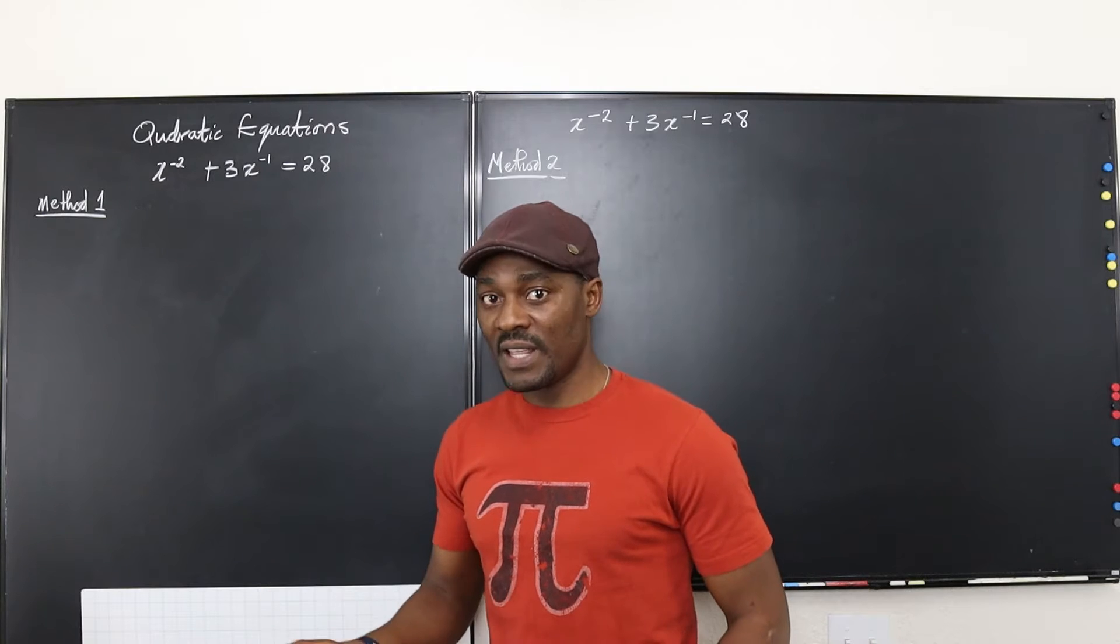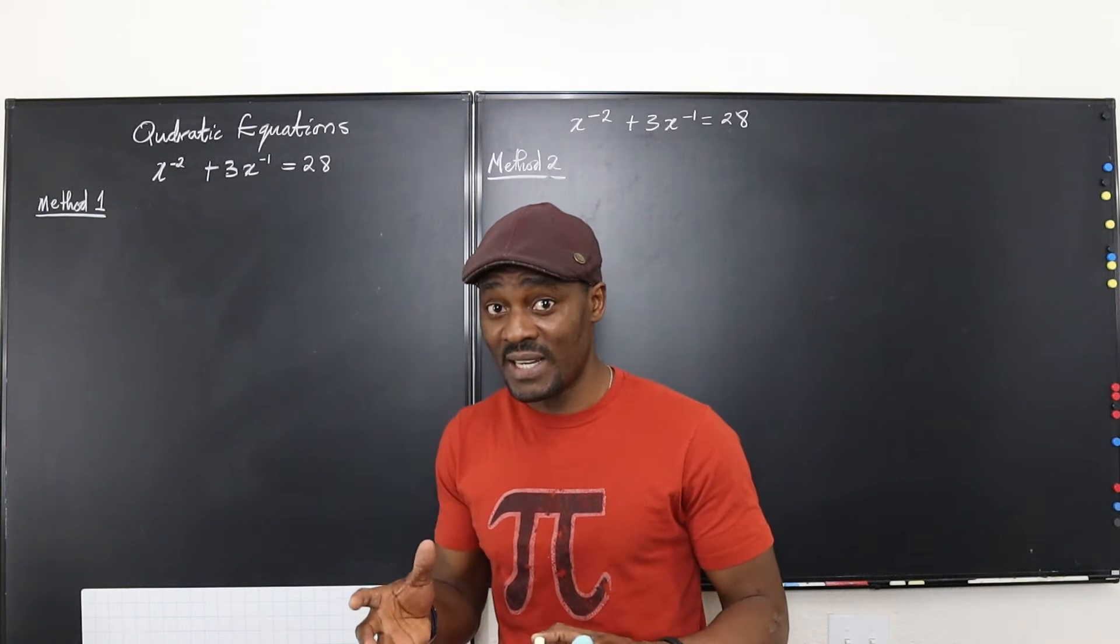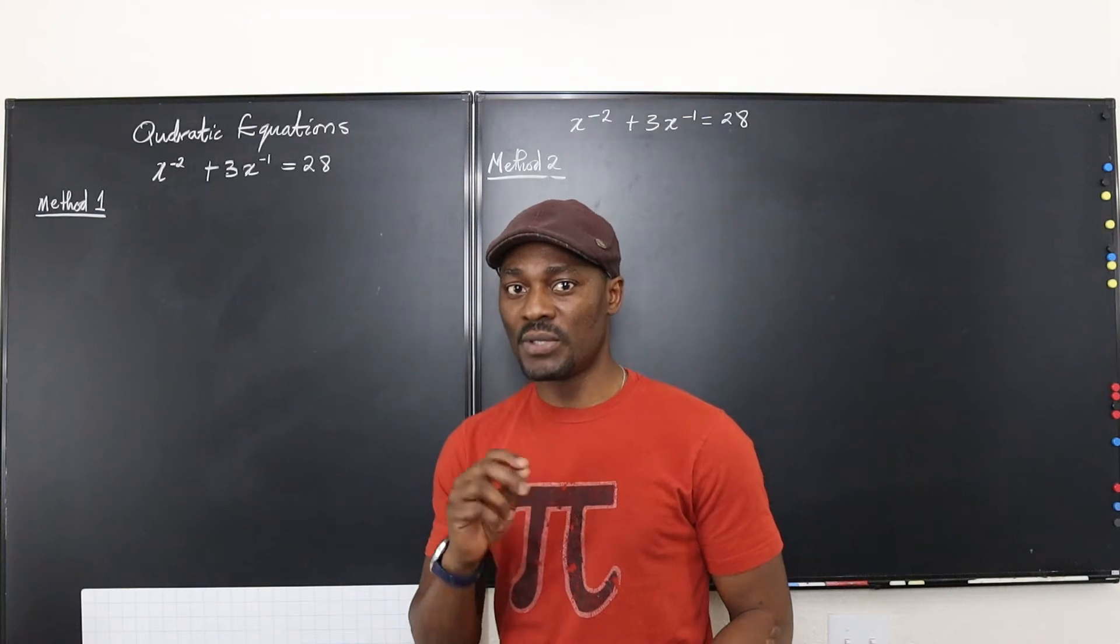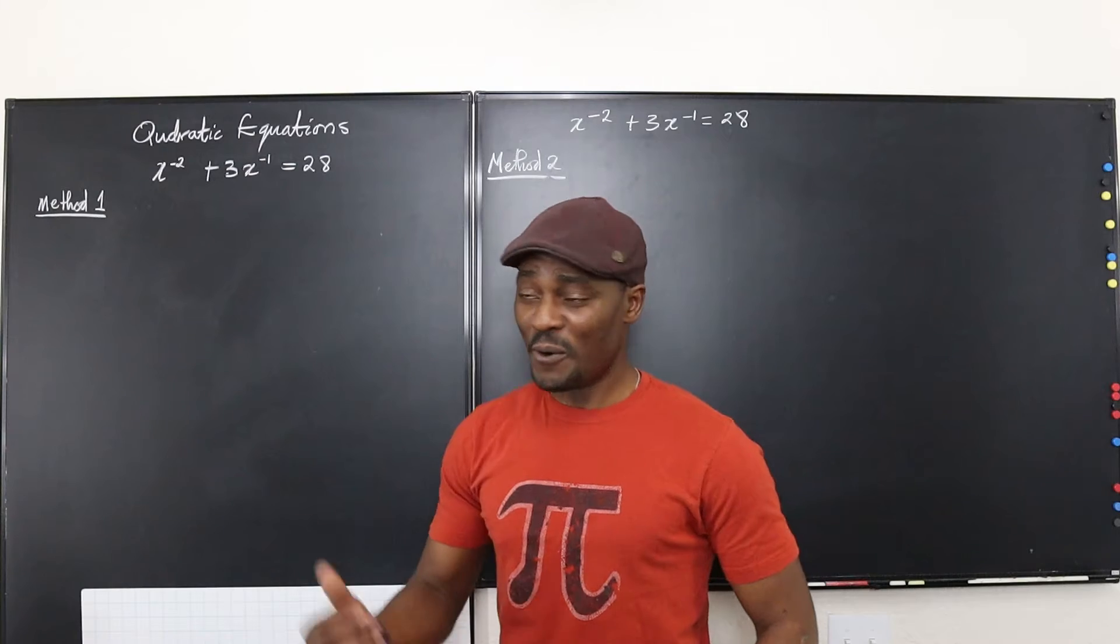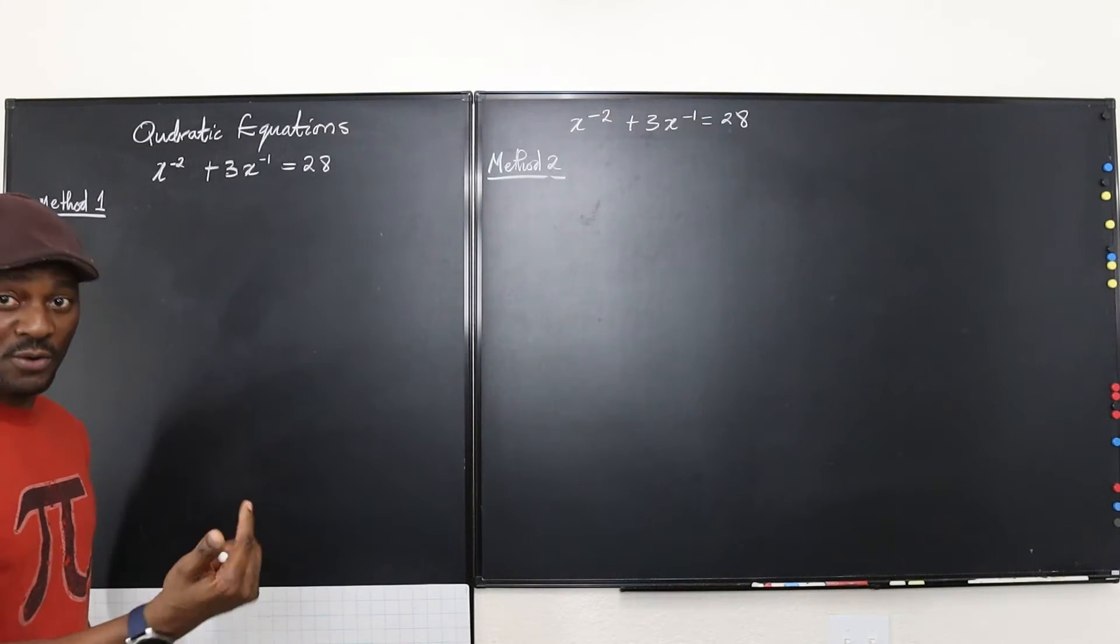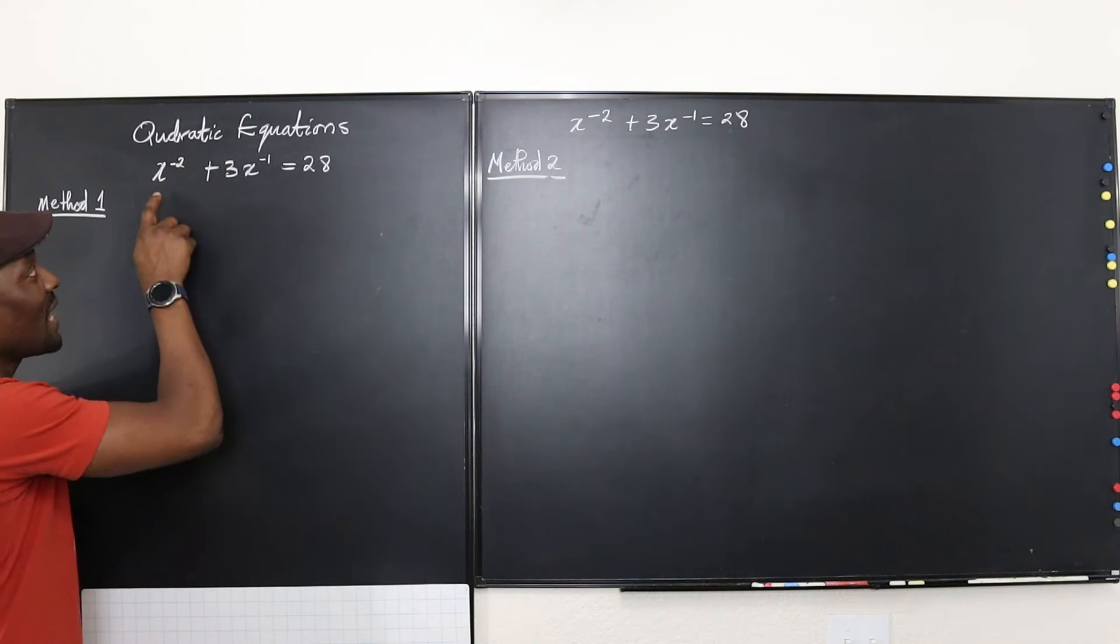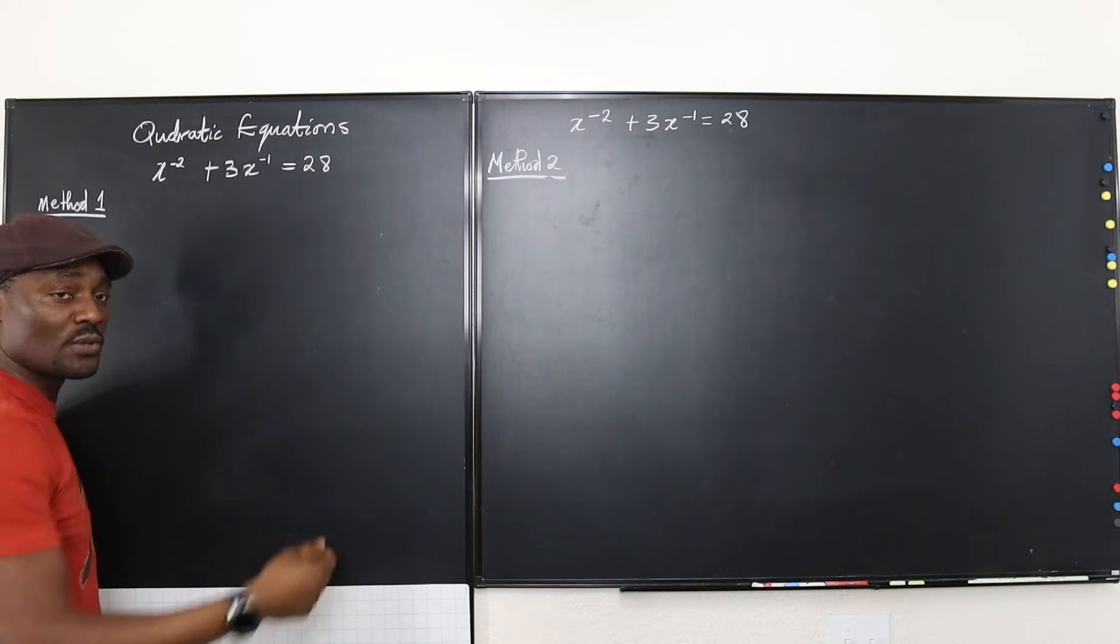Now if you can't solve it that way, you just want to replace whatever complexity is there, simplified by substituting using another letter and you'll be fine. So look at this question. There are two methods I'm going to use in solving the same question. And if you look at this, this is x^(-2) + 3x^(-1) = 28.